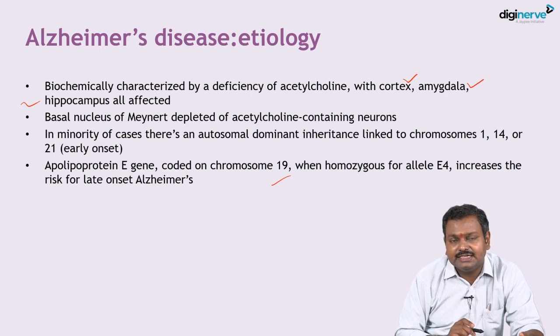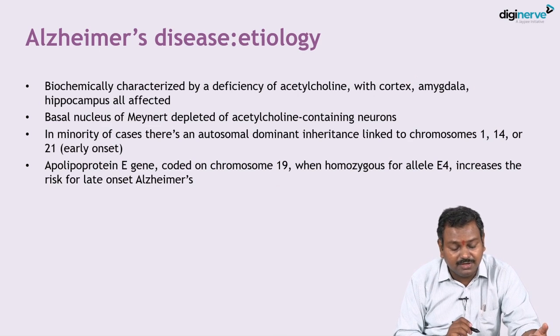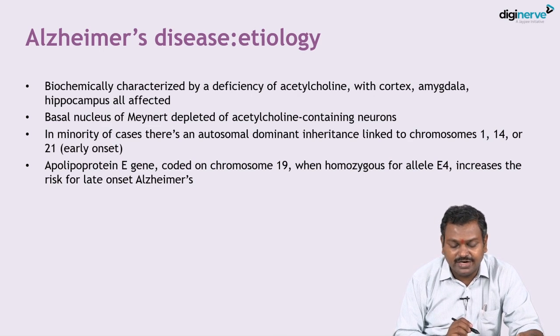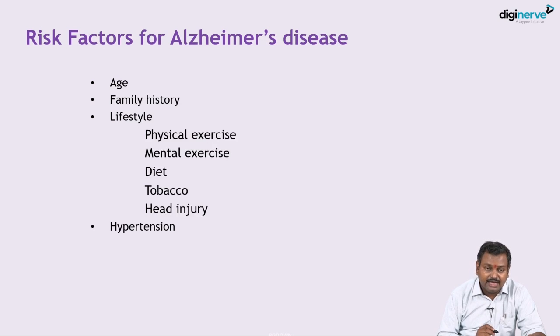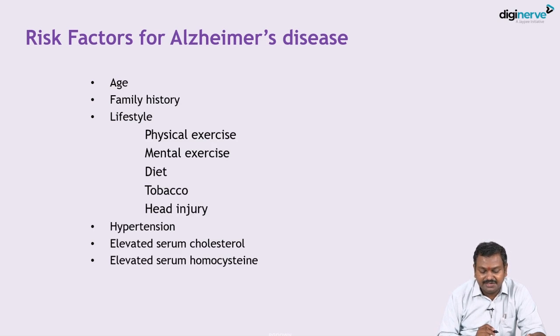When homozygous for the E4 allele of the apolipoprotein E gene on chromosome 19, the risk of Alzheimer's increases significantly. Other risk factors include age — the risk doubles every decade after 65 — family history, lifestyle factors such as physical exercise, mental exercise, diet, tobacco, head injuries, hypertension, elevated serum cholesterol, and elevated serum homocysteine, all proposed as mechanisms that could hasten Alzheimer's disease.